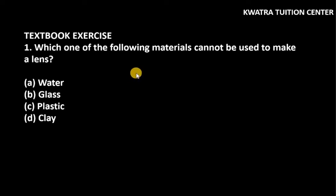Hello everyone, let's start with chapter light, reflection and refraction of class 10. Question number 1 from the textbook exercise is: Which one of the following materials cannot be used to make a lens?